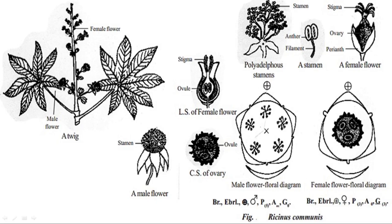Five perianth segments with stamens. One stamen consists of a filament and anther. Anther is dithecous. These stamens are polyadelphous stamens — because one stamen has branching, and the branches are ultimately stamens.